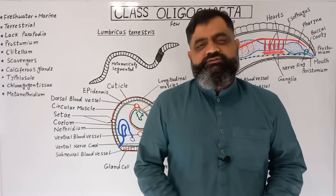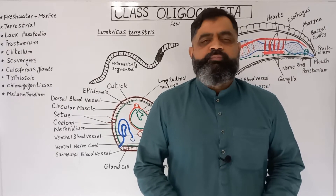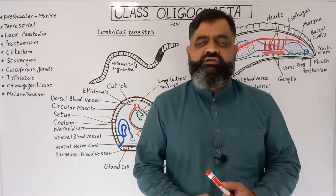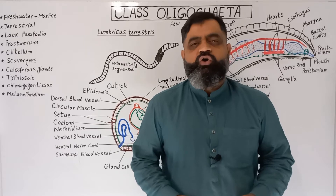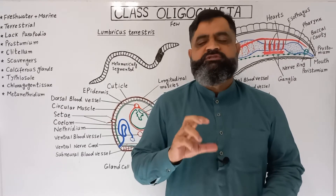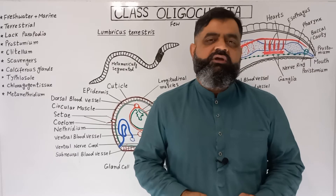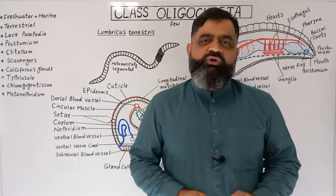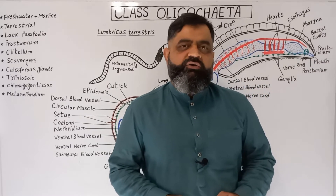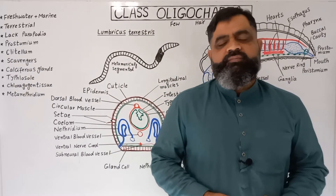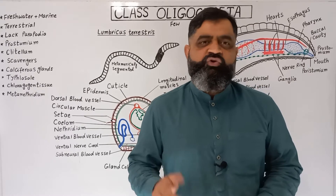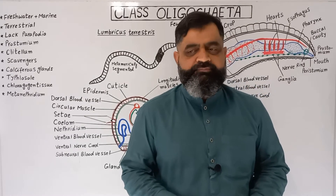Hello to all students. I hope you are doing fine. In this video lecture we are going to discuss general characteristics of Phylum Annelida, and we are specifically going to consult Class Oligochaeta, which contains worm-like animals usually known as earthworms. So let's move on to our lecture.